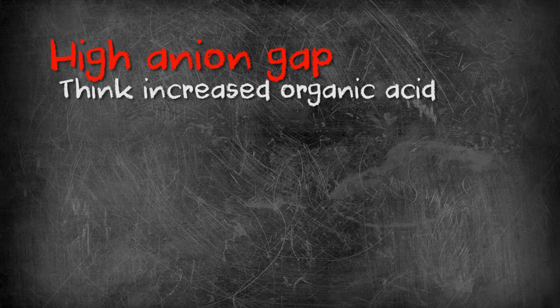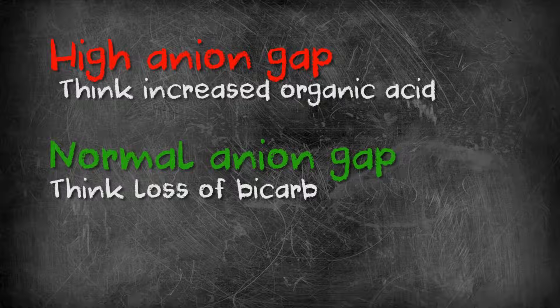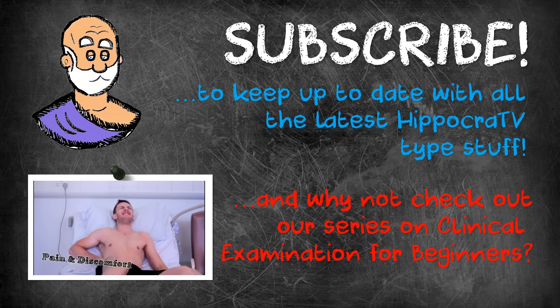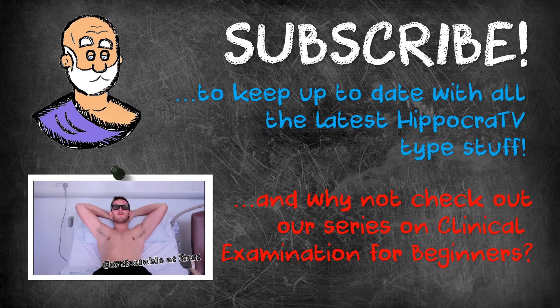Now, it might seem like a lot to take in, but to put it all simply: when you're looking at a metabolic acidosis, if the anion gap is high, think increased organic acid; if the anion gap is normal, think increased loss of bicarb. Anyway, if you have any other topics that you find difficult or burning questions about medicine that you'd like to ask, please do so and we'll see if we can't put out a few more regular videos in future. In the meantime, stay classy YouTube. We'll see you soon.